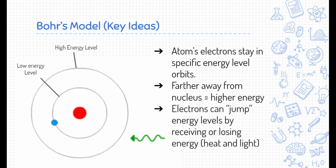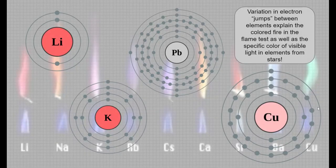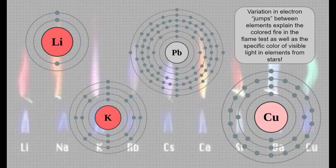Now electrons can jump between energy levels. They can't exist between energy levels, but they can jump from one energy level to another by receiving or losing energy, typically in the form of heat and light. Well, that helps us understand how the flame tests work.